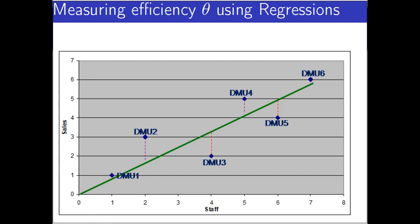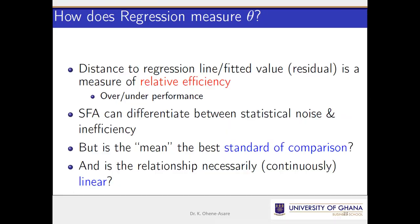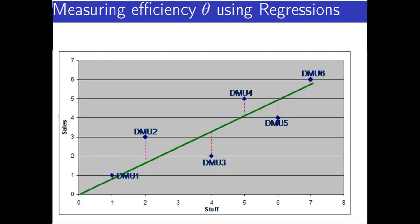That is quite strange. But regression actually says that if you are above the line, you are over-efficient, and we don't need over-efficiency. If you are below the line, you are under-efficient. And if you are on the line, you are efficient — so regression has many issues.